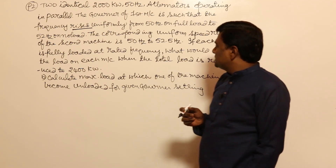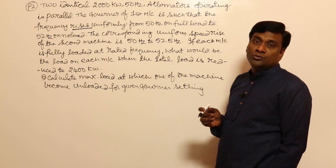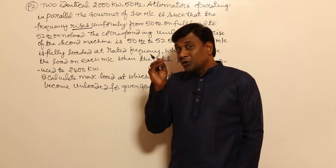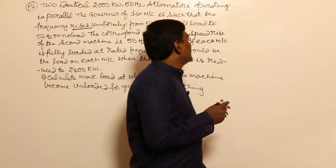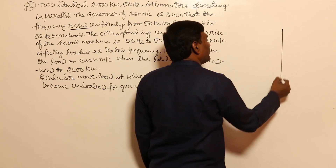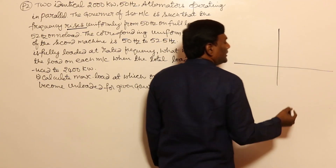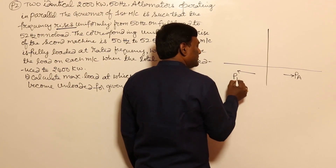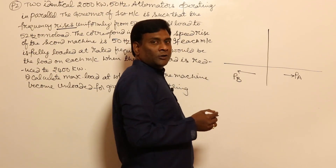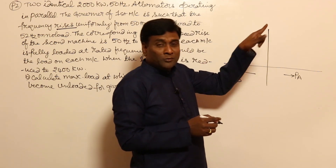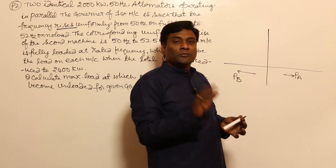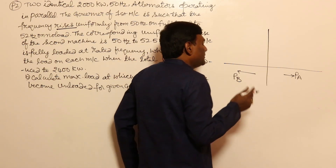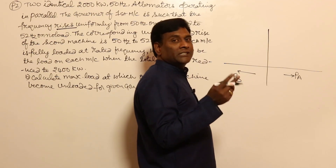If each machine is fully loaded at rated frequency, what would be the load on each machine when the total load is reduced to 2400 kilowatt? In load frequency control, only two machines will be considered — either two machines or one machine with an infinite bus. Let us label the first machine Pa and the second machine Pb.